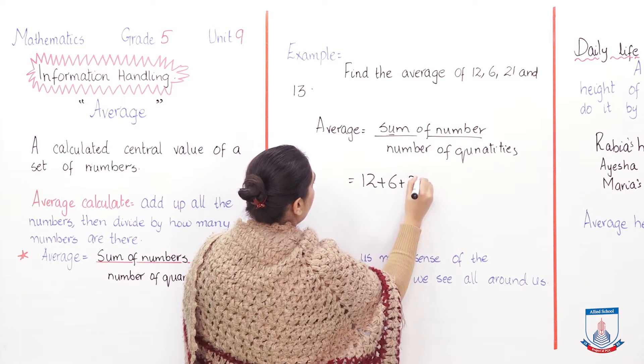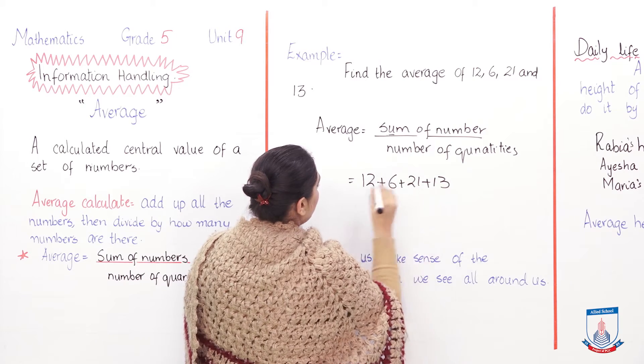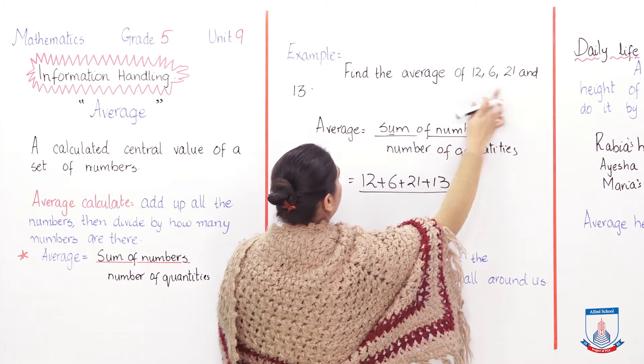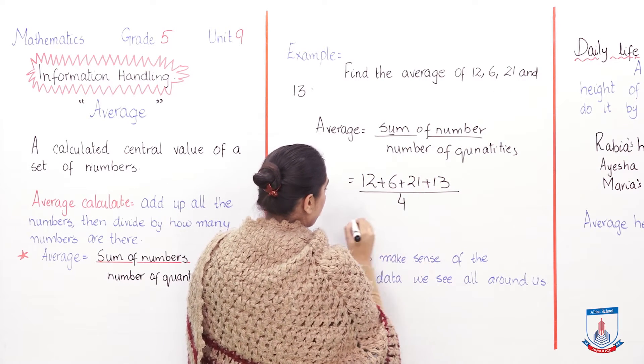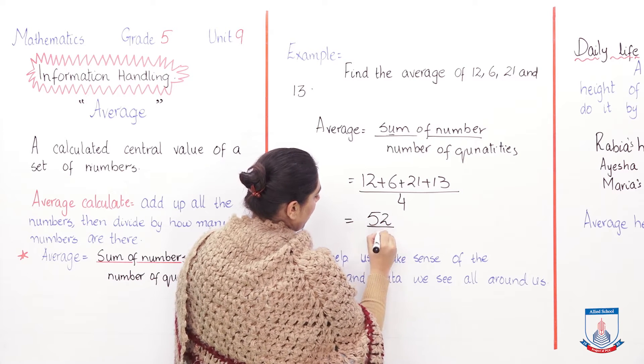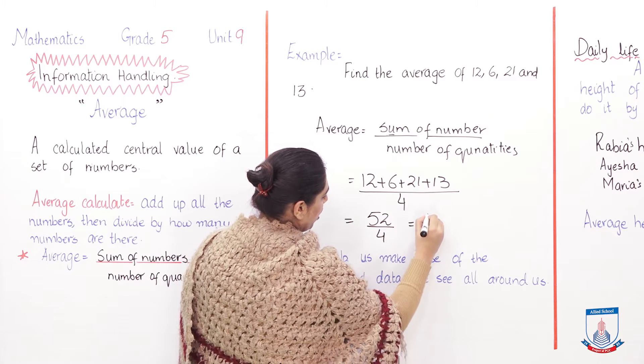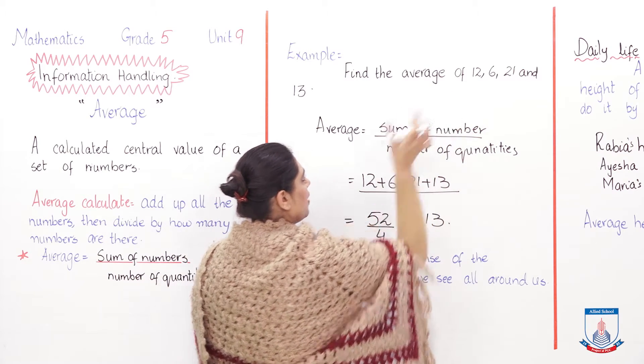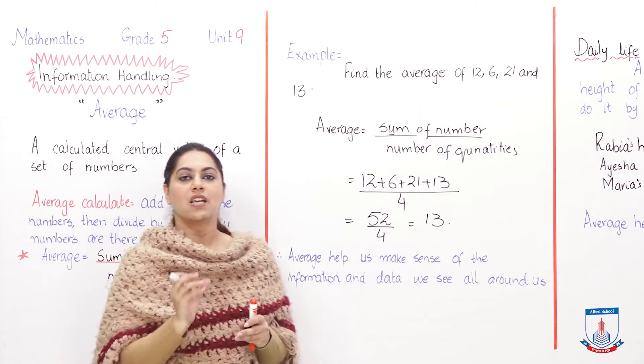So sum means I will add all the numbers: that is 12 plus 6 plus 21 and plus 13, and divide by how many quantities I have: 1, 2, 3, and 4. So when you add these, you will get 52. 52 divided by 4, and what will you get? 13. So 13 will be its average number. This is how you are going to find out the average.